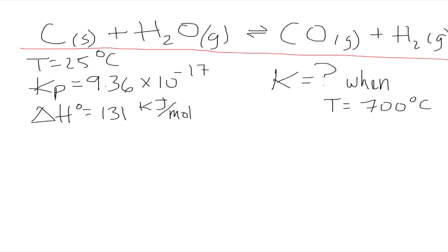Let's plot all the values. We have that ln of K2 over K1, which is 9.36 times 10 to the negative 17, is equal to negative 131,000 joules per mol over our value of R which is 8.314 joules per mol Kelvin.